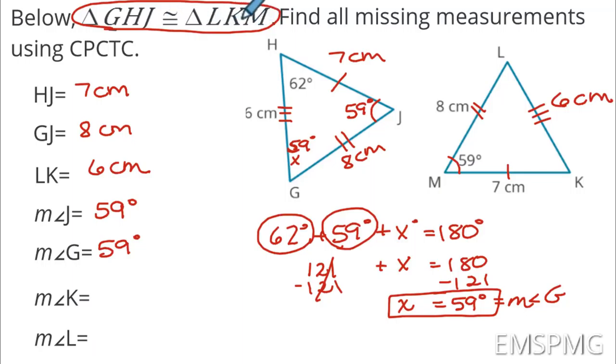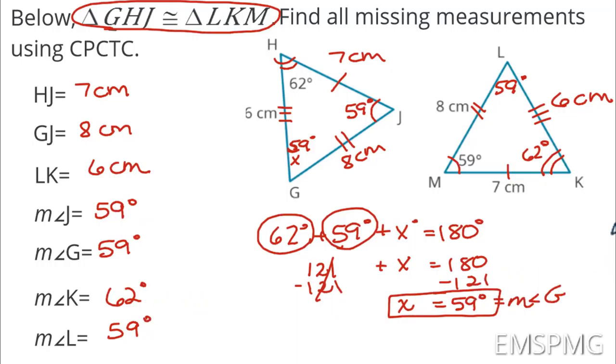I know that angle H is 62 degrees, plus angle J is 59 degrees, plus the measure of angle G — let's call it X degrees — equals 180 degrees. I combine like terms: 62 and 59 are the like terms, which add up to 121. So 121 plus X equals 180. I subtract 121 from both sides to isolate X, and I find that 180 minus 121 is 59 degrees. So the measure of angle G is 59 degrees. Note: it's a coincidence that two vertices share the value 59 — that's not always going to be true.